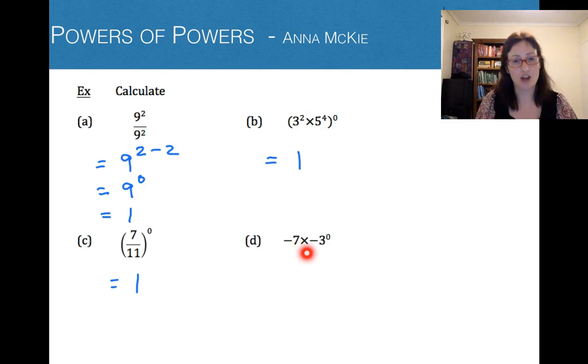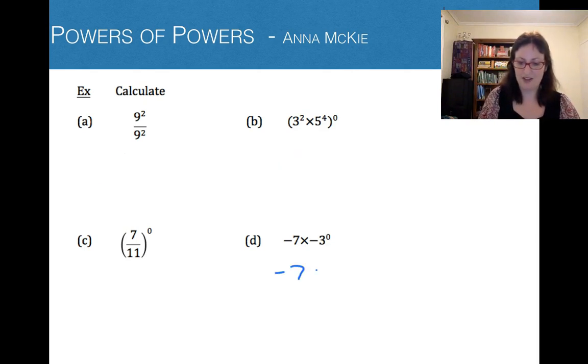We're having negative 7 times by negative 3 to the power of 0. So that negative 7 stays the same. Now working out negative 3 to the power 0: any number to the power of 0 is 1. Don't be confused—don't think that because there's a negative there with the 3 that you need to write negative 1. No. Any number to the power of 0 is 1, even if it's a negative number, the answer is still 1. So our final answer for that is negative 7.